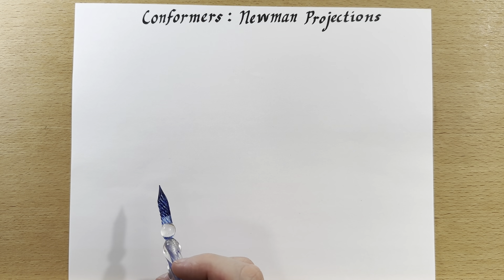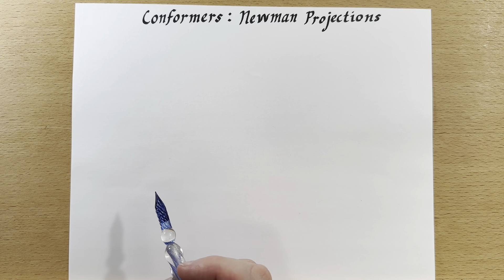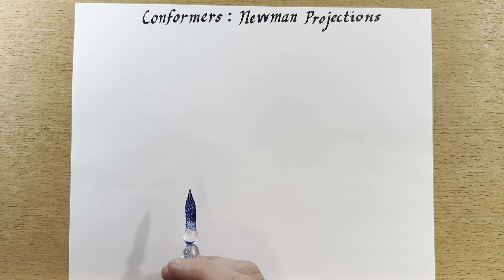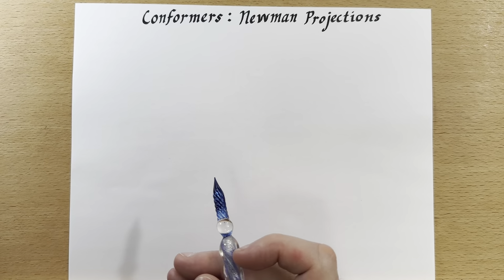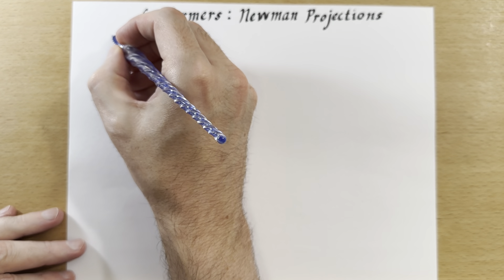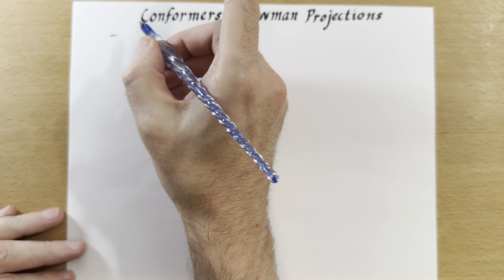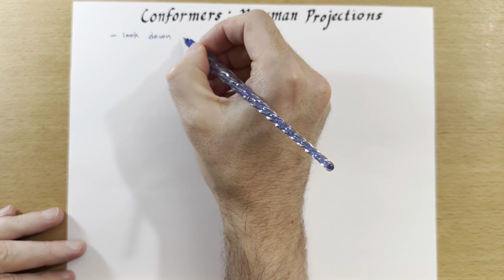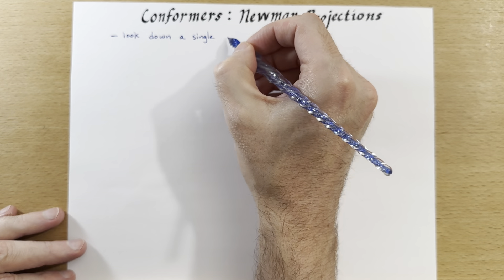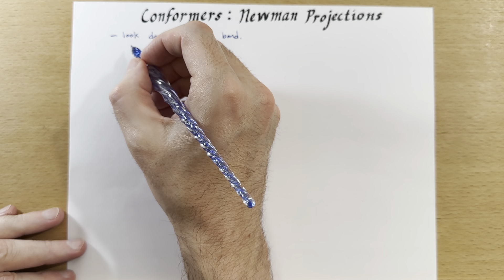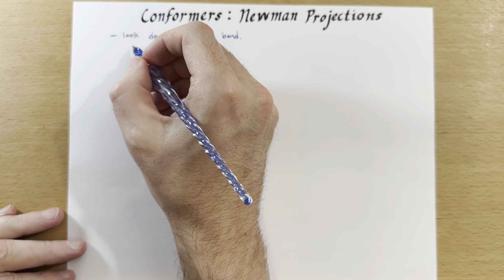Let's turn our attention to conformers and specifically we'll be looking at these through Newman projections. Conformers are isomers that have had a rotation about a single bond, and so the Newman projection is ideally situated to examine these. In a Newman projection, you look down a single bond and draw the near atom as a point and the far atom as a circle.